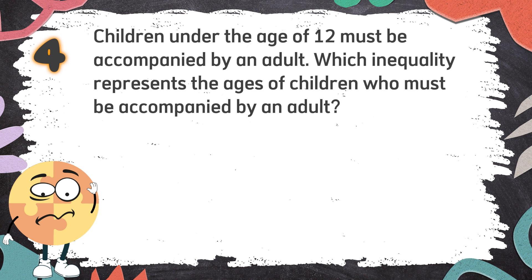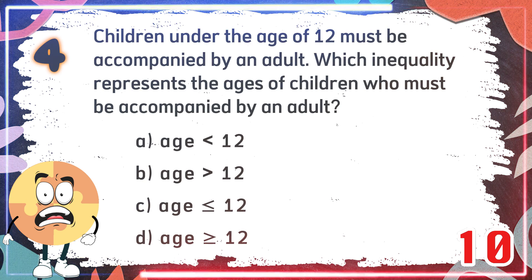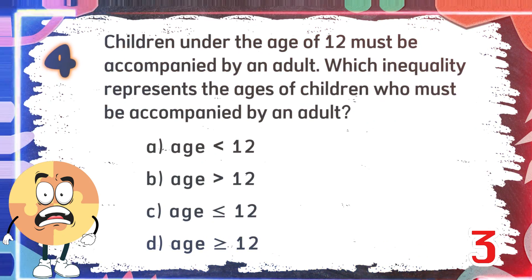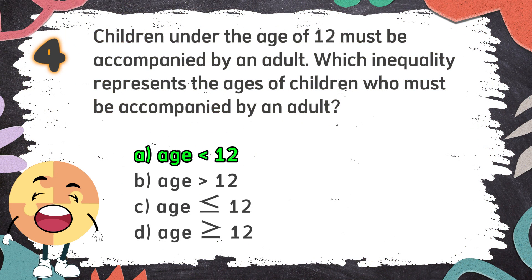Number 4: Children under the age of 12 must be accompanied by an adult. Which inequality represents the ages of children who must be accompanied by an adult? The choices are: A. Age is less than 12, B. Age is greater than 12, C. Age is less than or equal to 12, D. Age is greater than or equal to 12. The correct answer is A. Age is less than 12.